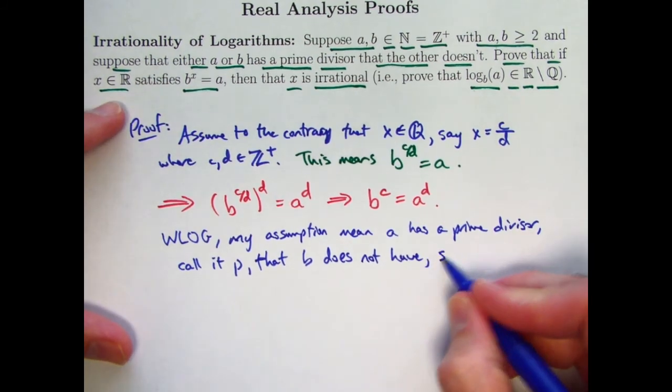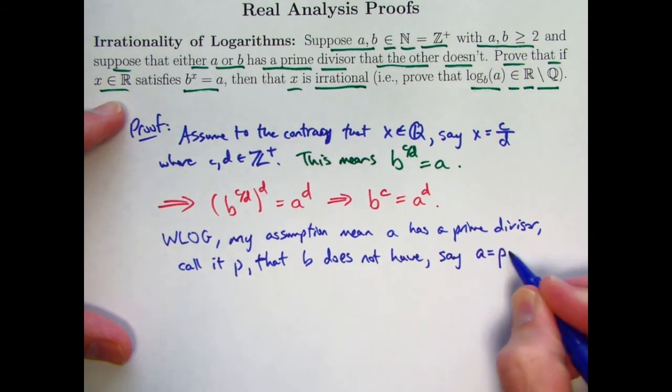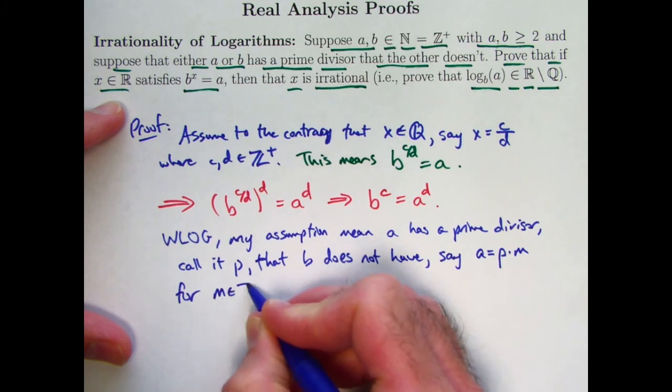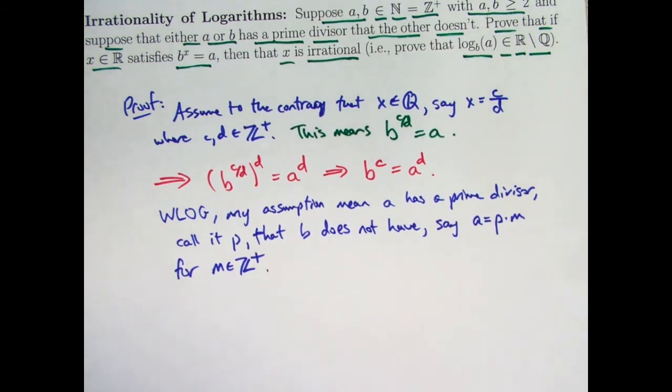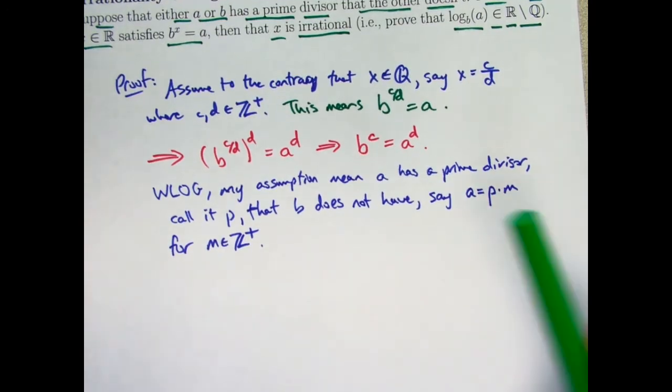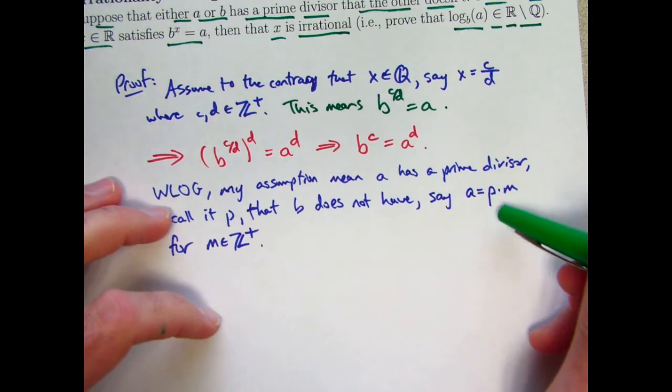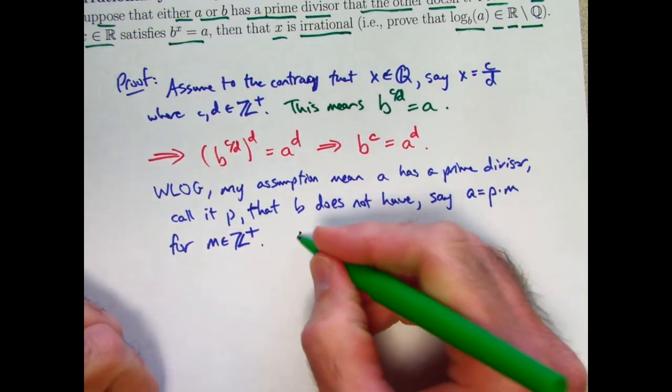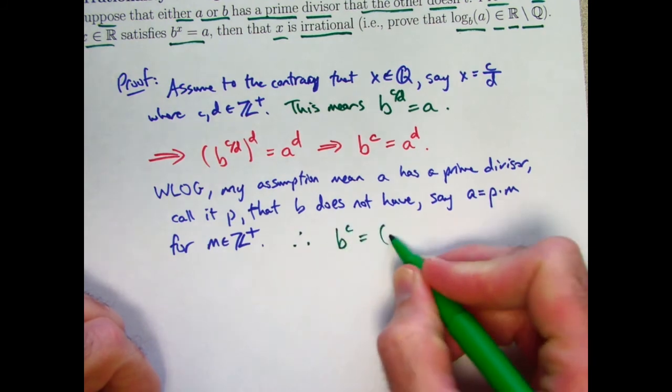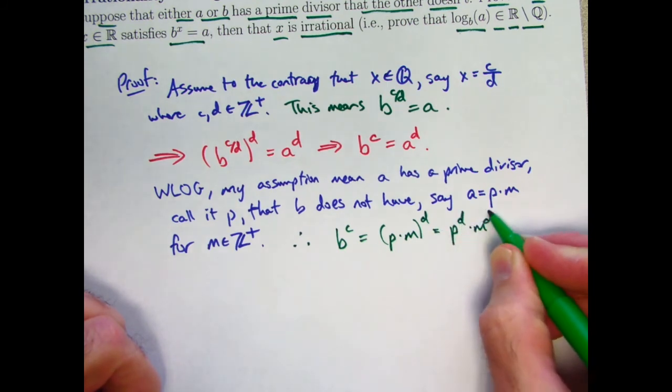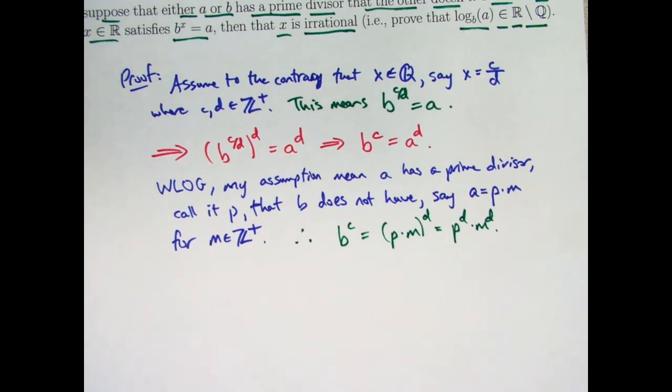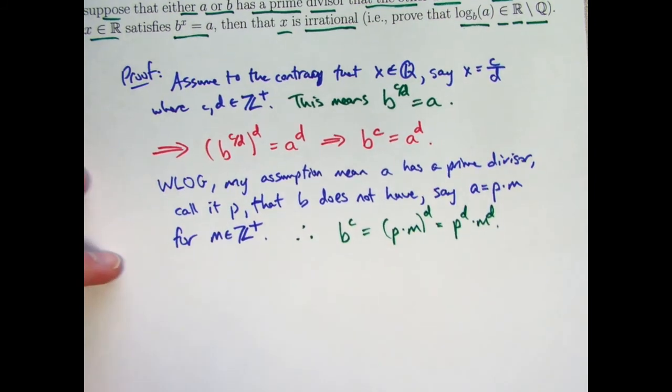So p is a prime number that divides into a. It's a factor of a and not of b. It's not a prime divisor of b. It's not a prime factor of b. Say a equals p times m for some positive integer m. Does p, is p a factor of m? Maybe, maybe not. It doesn't really matter. This is enough. And I think once you get to this point, it should be pretty clear what to do. Go ahead and replace a with p times m up here. Therefore, b to the c equals p times m to the d, which is p to the d times m to the d. And even if you don't know what to say at this point, I hope it's pretty clear that this essentially is your contradiction.